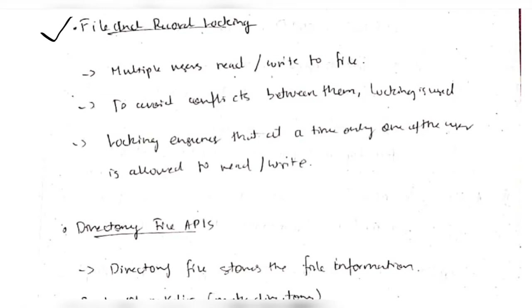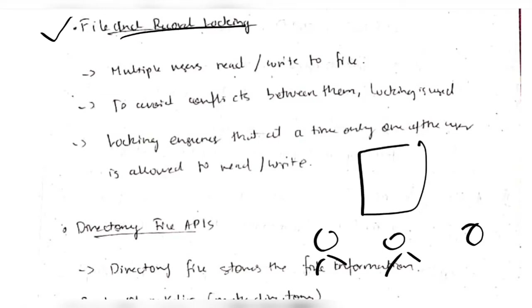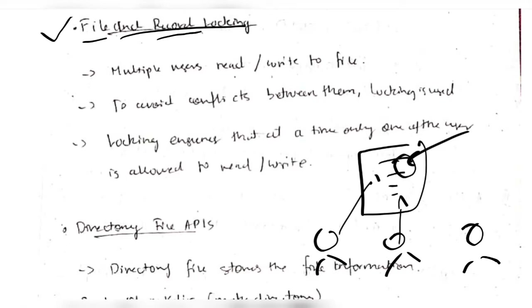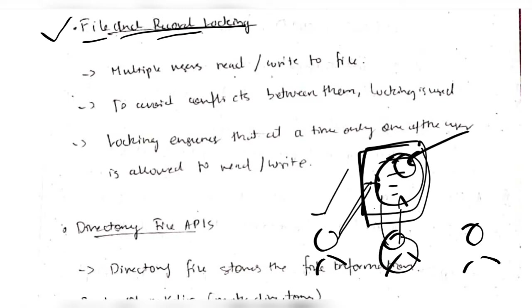The next topic is file and record locking. Suppose there is a file and multiple users are accessing it - when one user edits the file, others may not see the changes happening. So what we do is lock the file, meaning at a time only one user can read or write. After that user finishes the task, the next user will be able to access the file. In that way no user will miss out on any information.